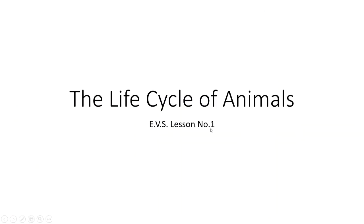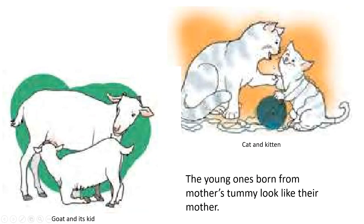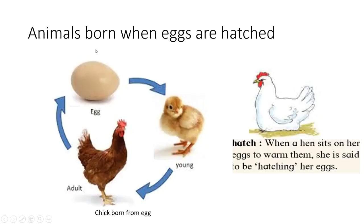EVS, lesson number one: The Life Cycle of Animals. Animals formed inside mother's tummy. Here I have a dog and a puppy — can you see the puppy and the dog look the same? Here I have a cat and a kitten — they also look similar. Now here is a goat and a kid — do they look different? No, they look the same. So young ones born from mother's tummy look like their mother.